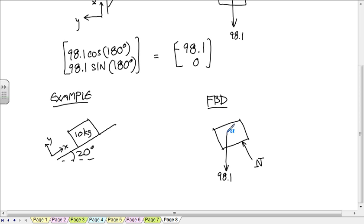So put the weight force at the tail of, the tail of the weight force at the origin of the coordinate system. And I think it helps to draw the negative x and the negative y in there.